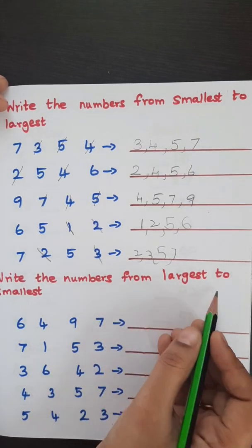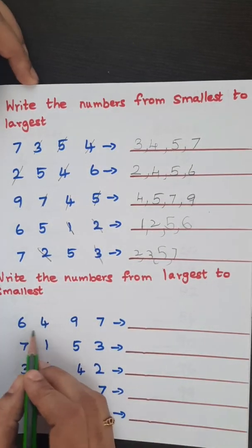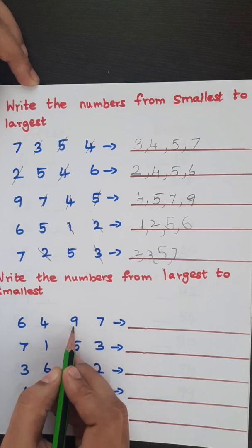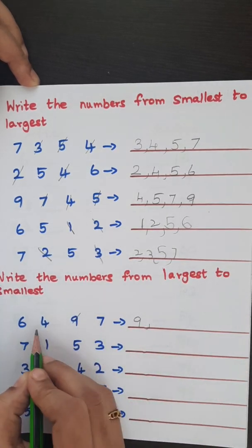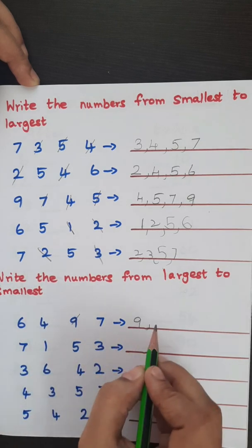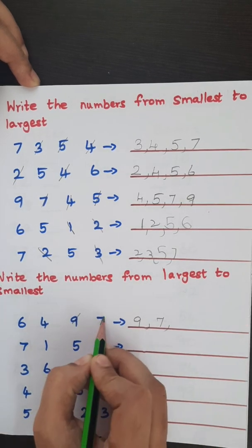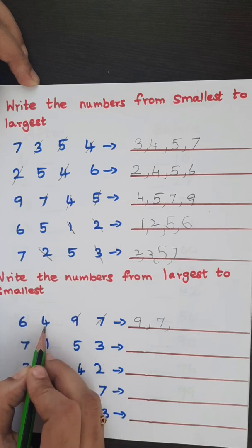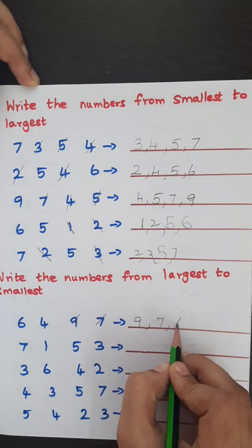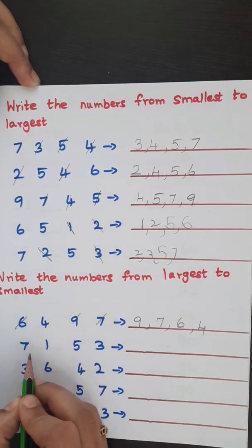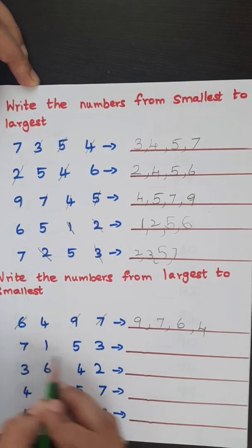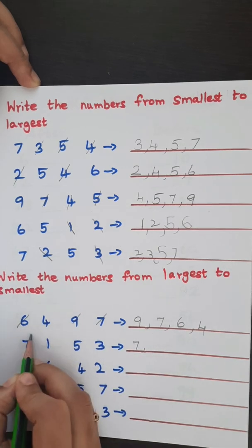Write the numbers from largest to smallest. Here the child has to identify which is the largest number. 9 is the largest one, so we'll write 9. Then which is the largest number between these three numbers? 7. So we'll cut it. Next, between these two numbers, 4 and 6, 6 is the largest one, so we'll write 6. Then comes 4. Same way here, 7 is the largest one, we'll cut it.